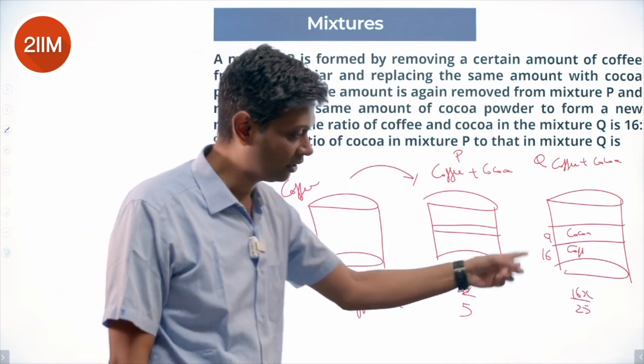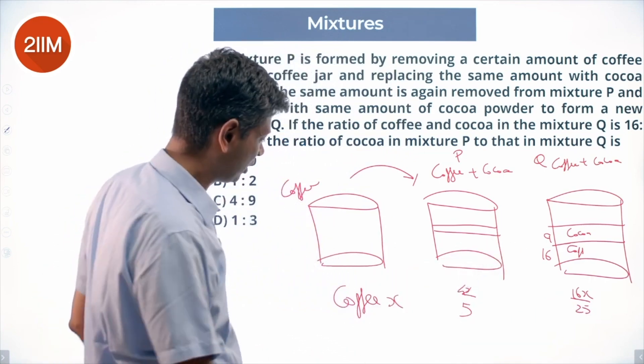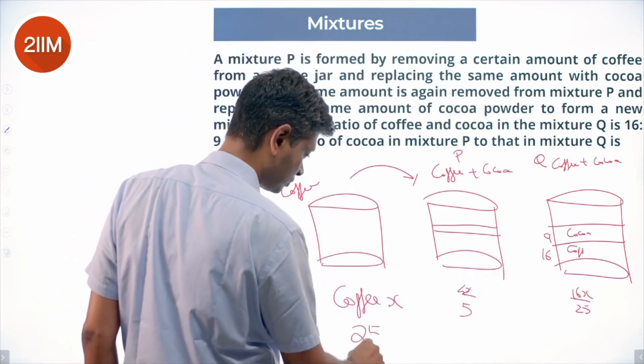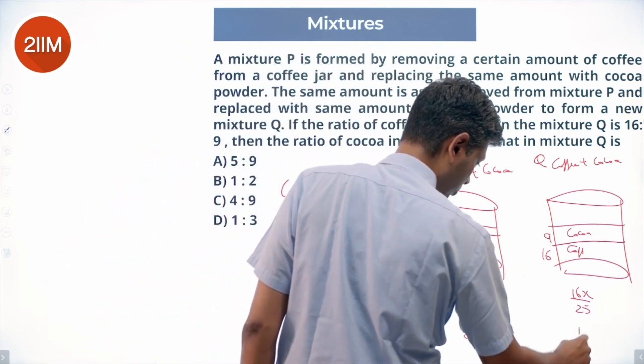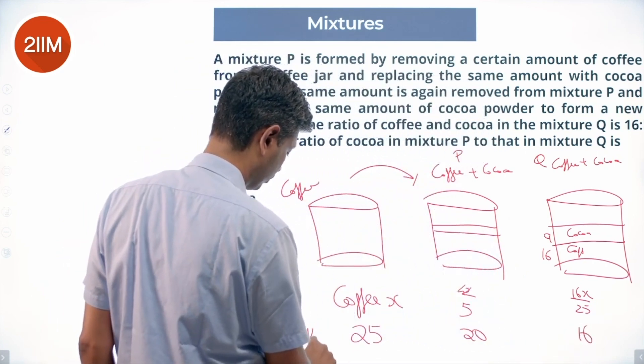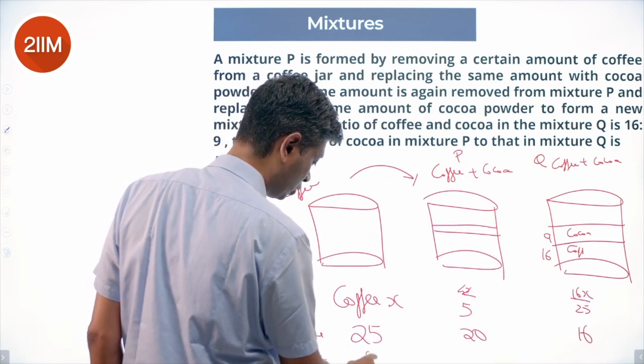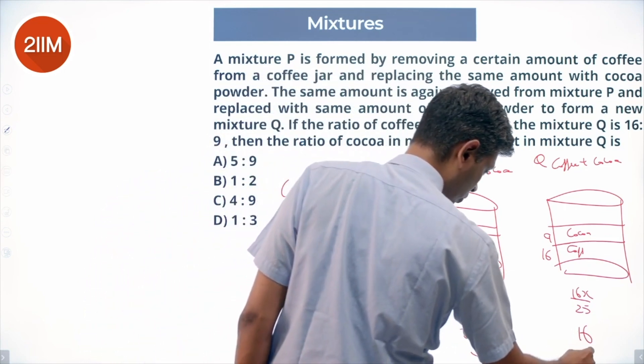So coffee is x, 4x/5, 16x/25. Instead of this I am going to say coffee is 25, becomes 20, becomes 16. Initially this is coffee. Cocoa is 0, cocoa is 5, cocoa is 9.